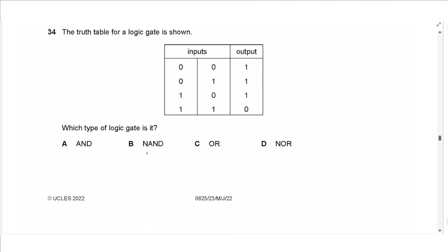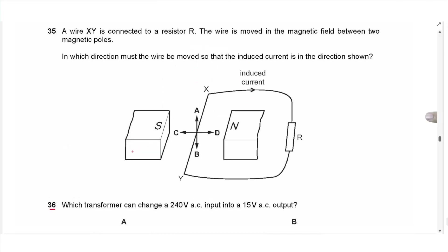Question 34 is about logic gates. The truth table shows outputs of 1 for inputs 0-0, 0-1, and 1-0, but 0 for input 1-1. This is the opposite of an AND gate, making it a NAND gate. The answer is B.